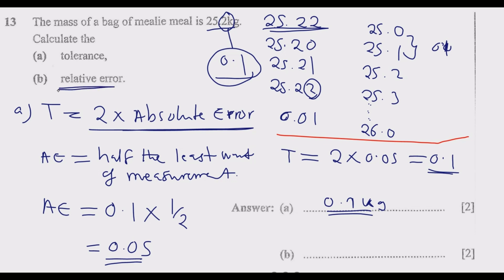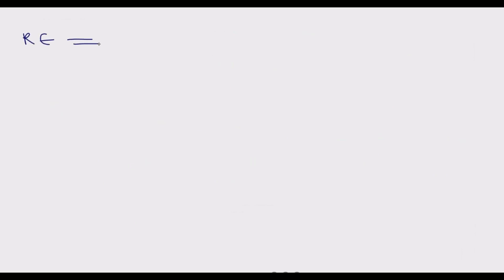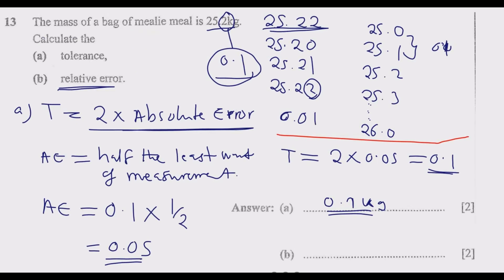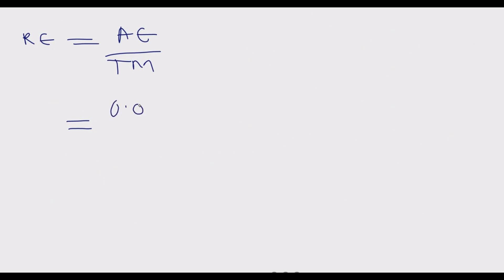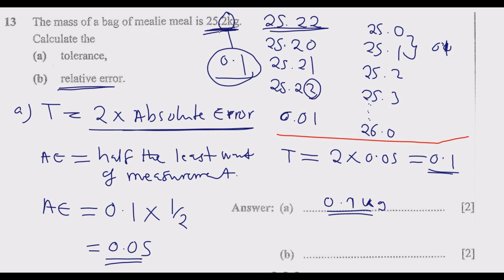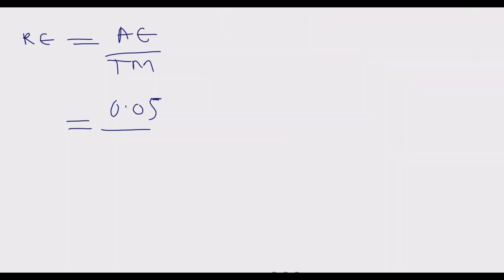For part (b), the relative error (RE) is equal to the absolute error divided by the true measurement. The absolute error we found is 0.05, and the true measurement — the actual value given — is 25.2. So we have RE = 0.05 ÷ 25.2.